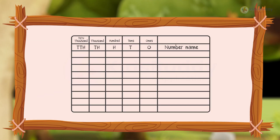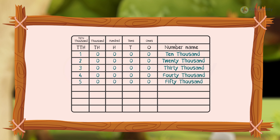Now let us look at some 5-digit numbers and their number names: 10,000, 20,000, 30,000, 40,000, 50,000, 60,000, 70,000, 80,000, and 90,000.